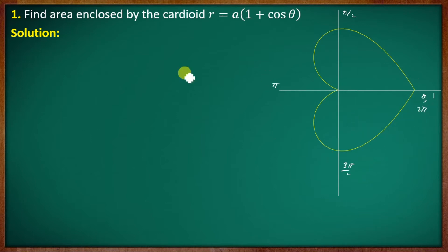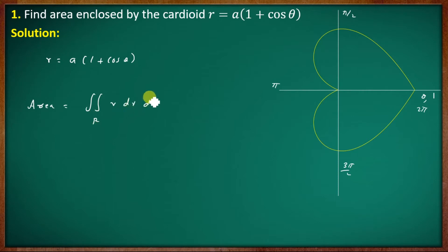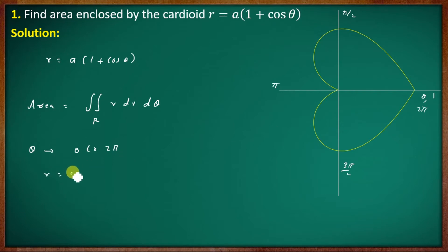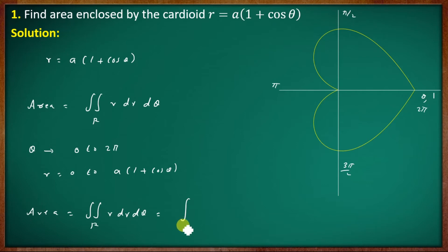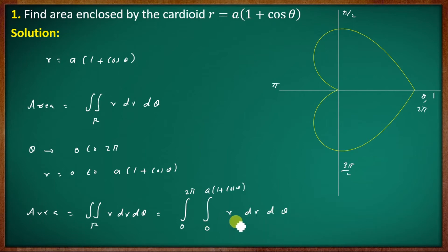For the cardioid r = a(1 + cosθ), the area equals the double integral: θ from 0 to 2π, r from 0 to a(1 + cosθ), of r dr dθ.